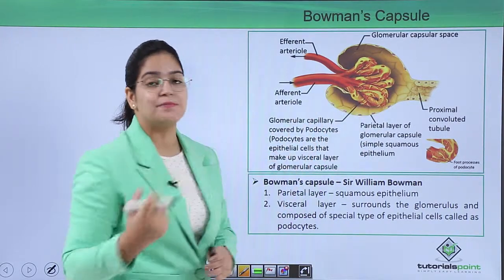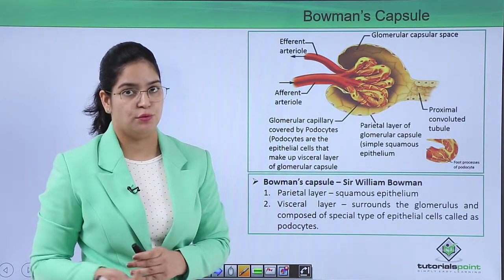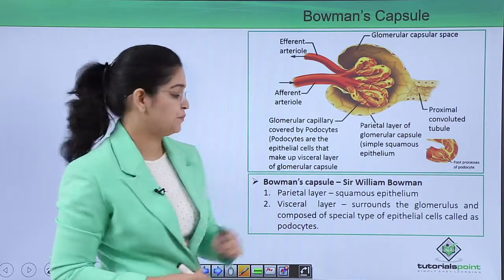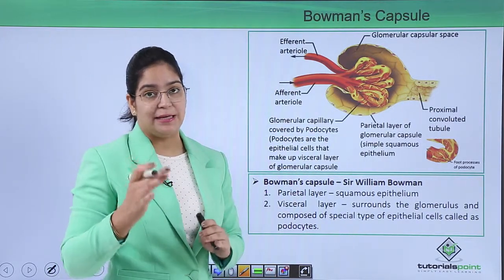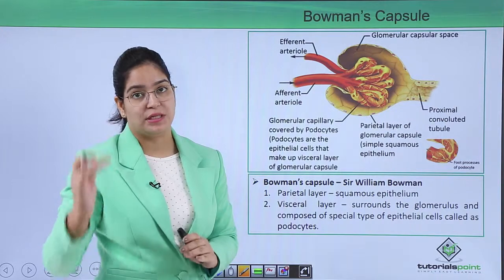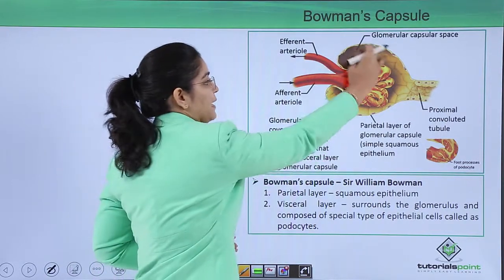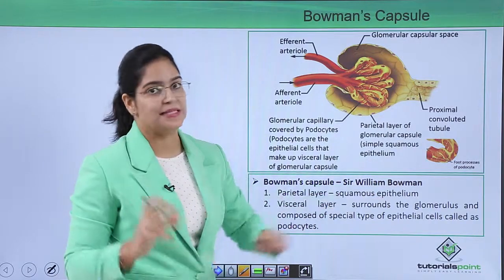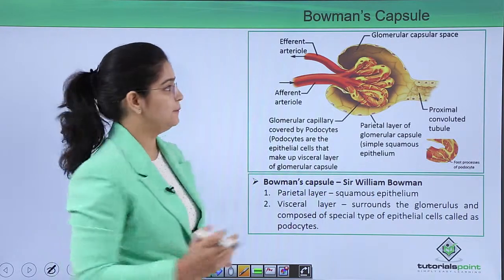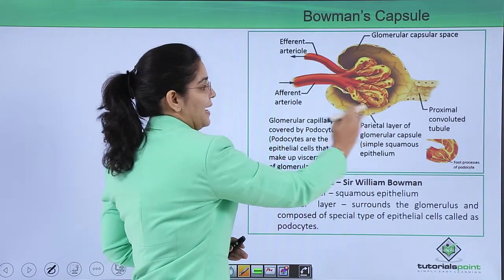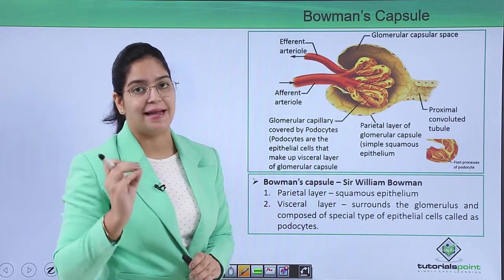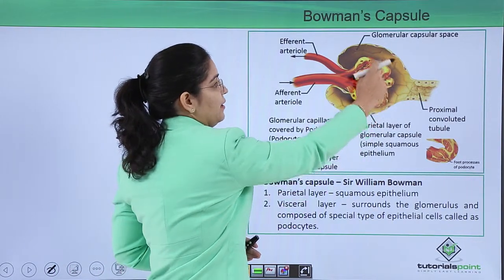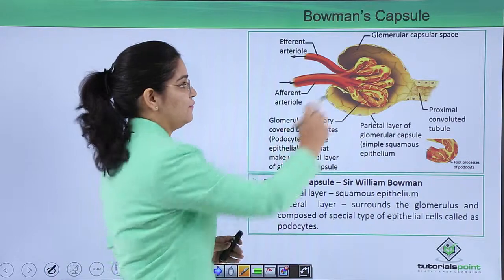The two layers are: first, the parietal layer, and second, the visceral layer. The parietal layer is the outer layer of the cup, and it is made up of squamous epithelium. The internal lining, called the visceral layer, is connected to the glomerulus — the tuft of capillaries.